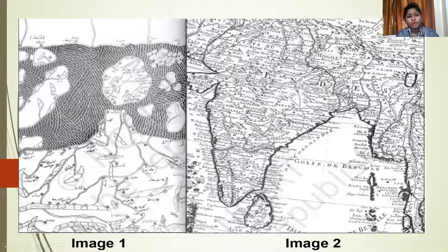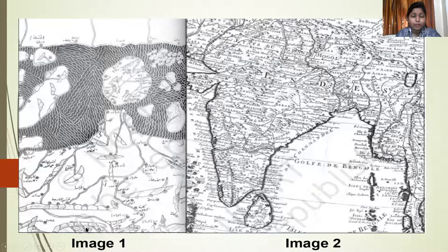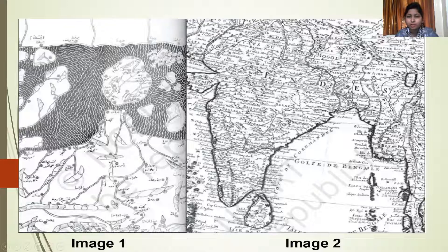In image one, you can see that Sri Lanka, which is found at the bottom side in image two, is found at the upward location in image one. The place which exists on the north side is found to be in the southern part, whereas Sri Lanka, which we usually locate in the south, is in the northern part. So Map 1 is tilted upside down compared to the present map, while Map 2 is very similar to our present-day map.